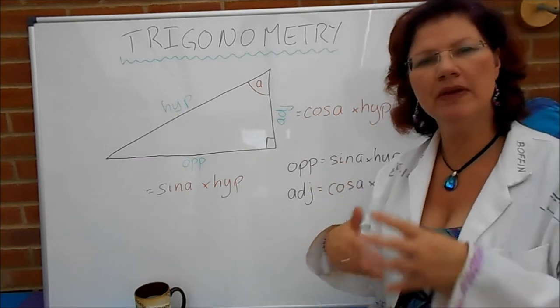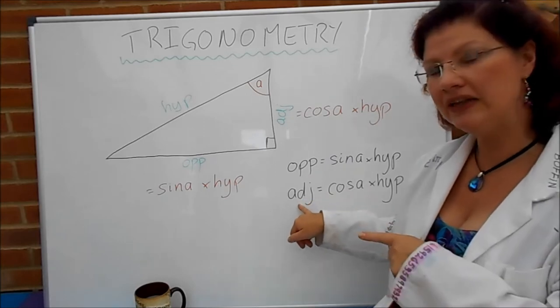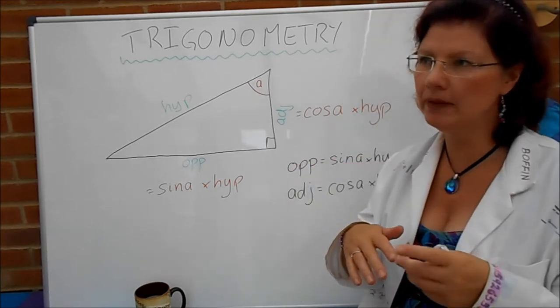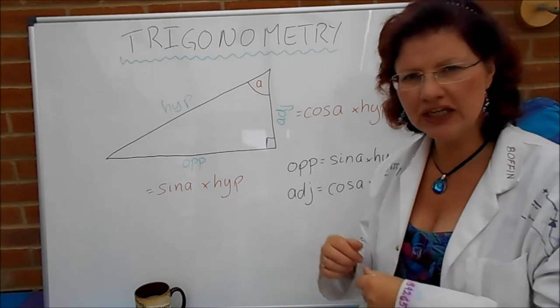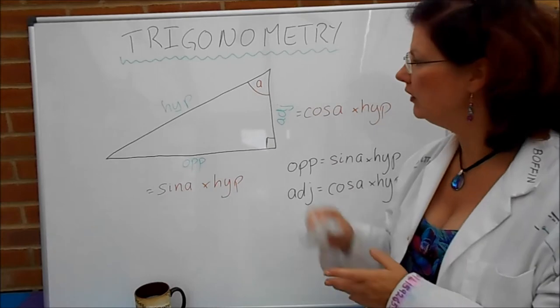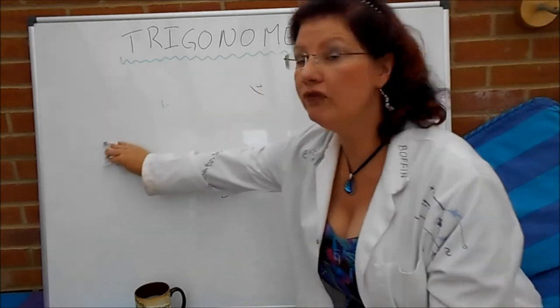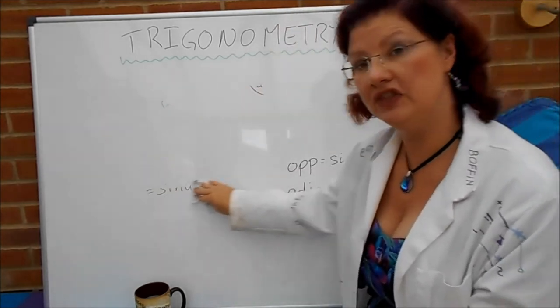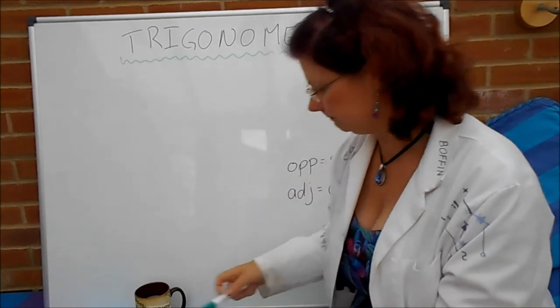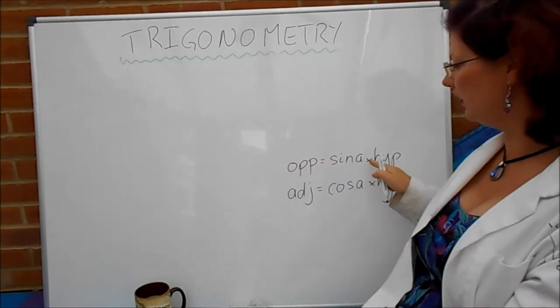But another way that can be written out that's a bit more useful for using them in all kinds of different things because this one here allows you to calculate the adjacent if you've got the angle and the hypotenuse. But what if you want to get the hypotenuse or perhaps you've got the sides and you want to get the angle? So rearranging it in different ways. And here is one that's very popular which is the formula triangles. So I'm just going to rub this out and draw in the formula triangles.